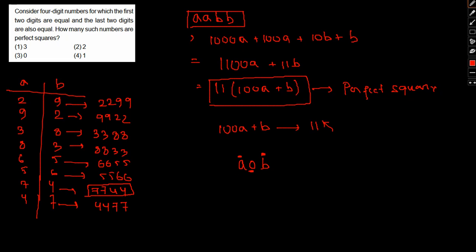7744 is basically the square of 88. The rest, none of them are perfect squares. So only one such possibility exists. I hope it is clear regarding the approach. We have to check which of the following is a perfect square.